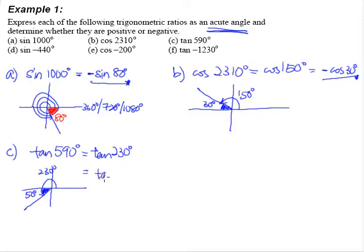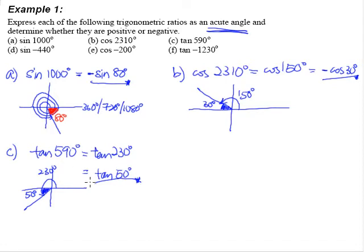So tangent 230 degrees is the same as tangent 50 degrees. Because it is in the third quadrant and using 'All Signs Teacher Crazy' — T stands for tangent — tangent is positive in the third quadrant, so the answer is positive. Verify using a calculator.